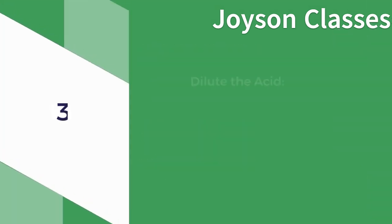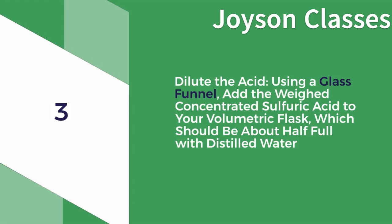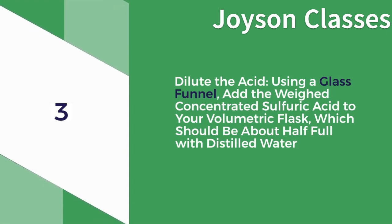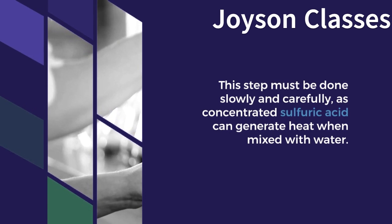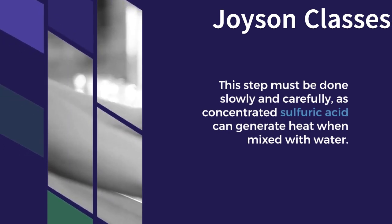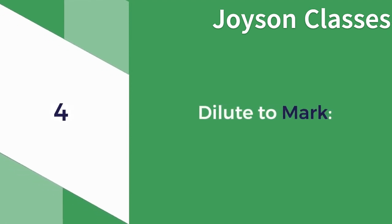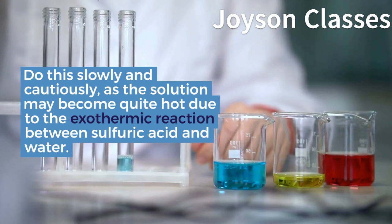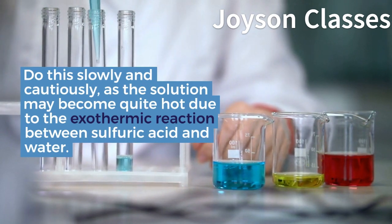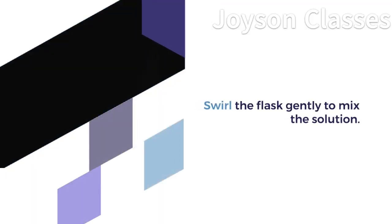3. Dilute the acid — using a glass funnel, add the weighed concentrated sulfuric acid to your volumetric flask, which should be about half full with distilled water. This step must be done slowly and carefully, as concentrated sulfuric acid can generate heat when mixed with water. 4. Dilute to mark. Do this slowly and cautiously, as the solution may become quite hot due to the exothermic reaction between sulfuric acid and water. Swirl the flask gently to mix the solution.